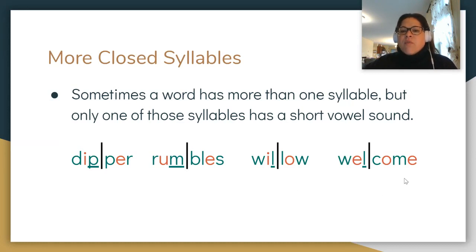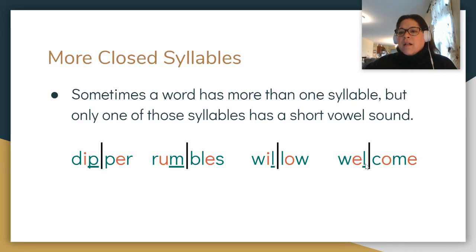And let's look at our last example of where only one of the syllables is a closed syllable. The L is underlined here because it closes off our short vowel E sound — 'well.' Now the M does not close this off. This is a sight word, 'come,' where the E and O don't follow the typical silent E rule. So we've got 'well' + 'come' = 'welcome.'